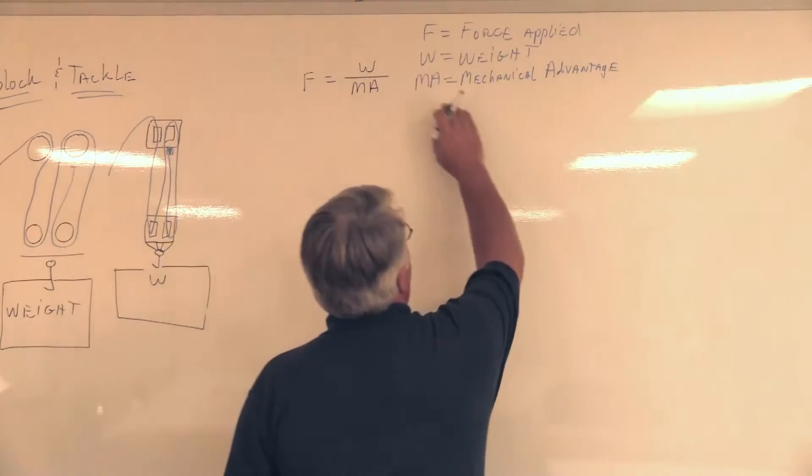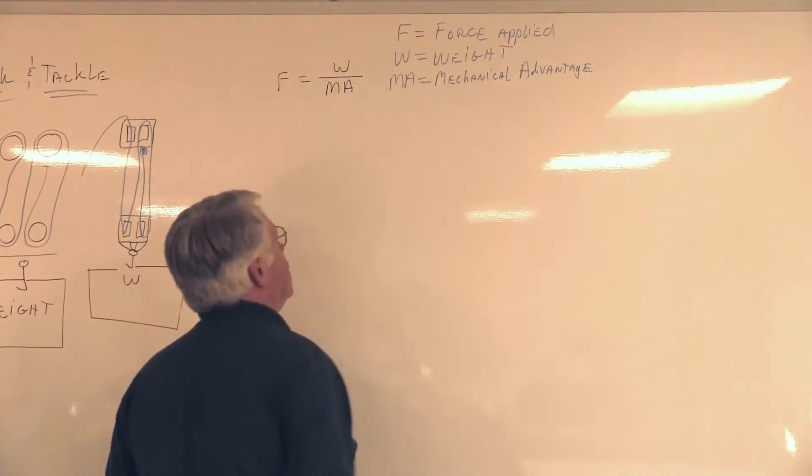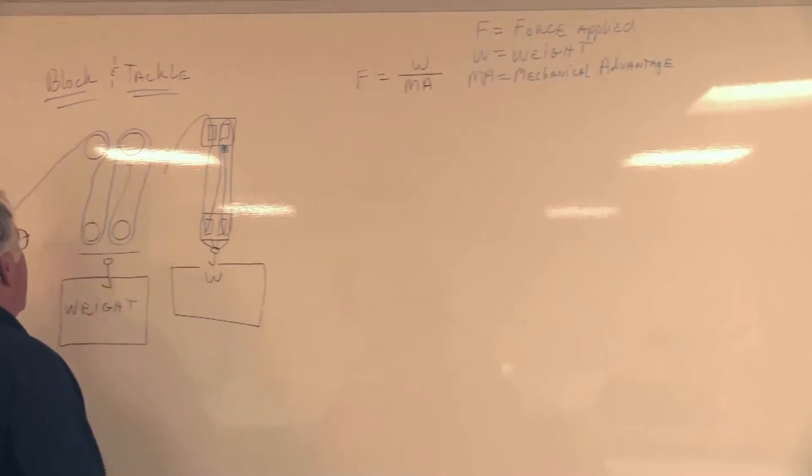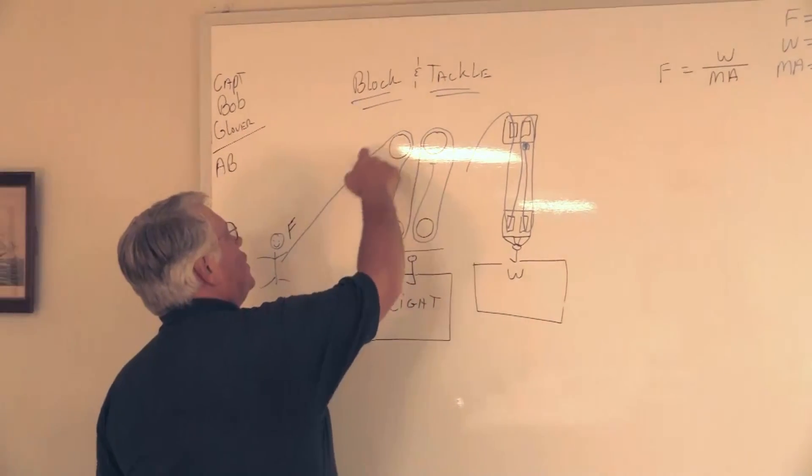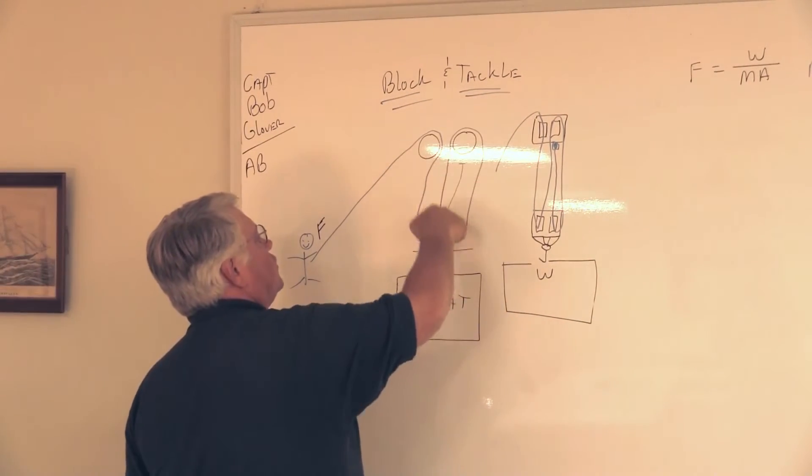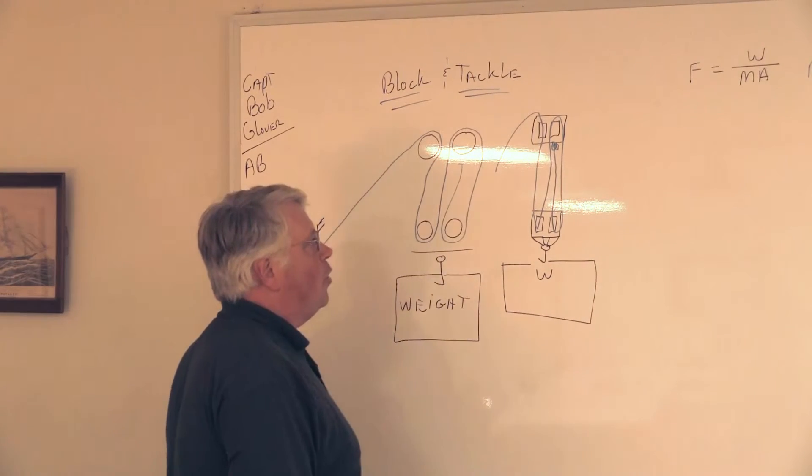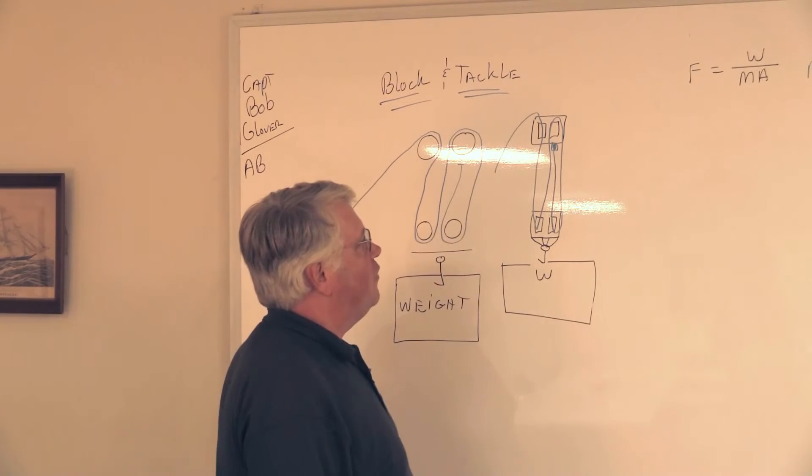What is this term, mechanical advantage? That's where the block and tackle come in. By roving this line through these shivs, we create what we call a purchase or a mechanical advantage.